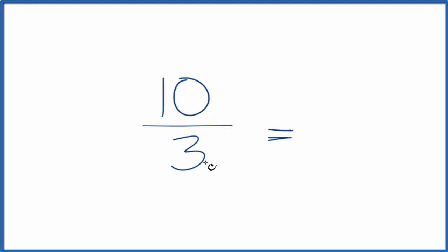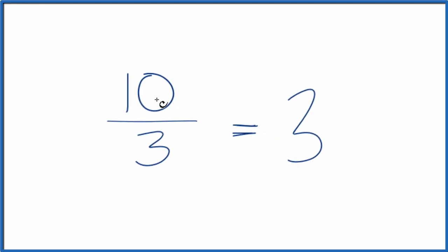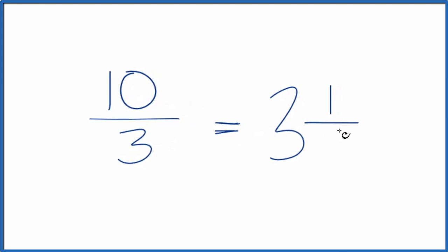To do that you divide 3 into 10. So 3 times 3 is 9, with 1 left over. Bring the 3 across.